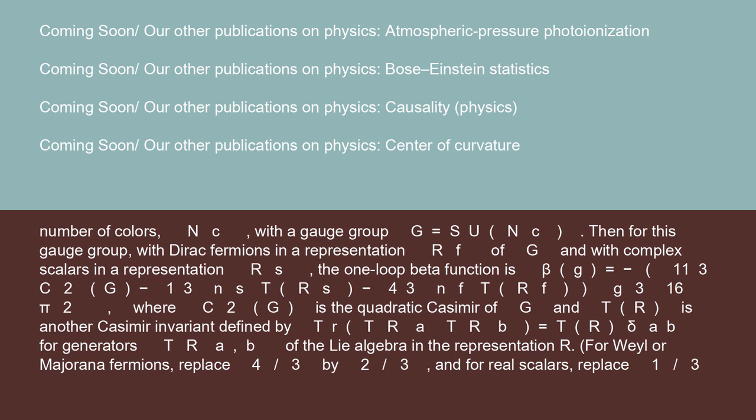Then for this gauge group with Dirac fermions in a representation r_F of G and with complex scalars in a representation r_S, the one-loop beta function is β(g) = -[(11/3)C_2(G) - (1/3)N_S T(r_S) - (4/3)N_F T(r_F)] × g³/(16π²), where C_2(G) is the quadratic Casimir of G and T(r) is another Casimir invariant defined by Tr(T^r_A T^r_B) = T(r)δ_AB.